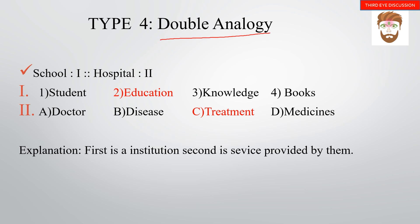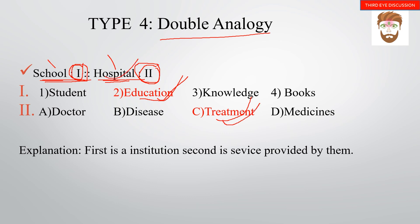Type 4 is double analogy. Each relation has two pairs with two relations. For example: school is to education and hospital is to treatment. Both pairs share the same relationship type, and you select the matching pair from the options.